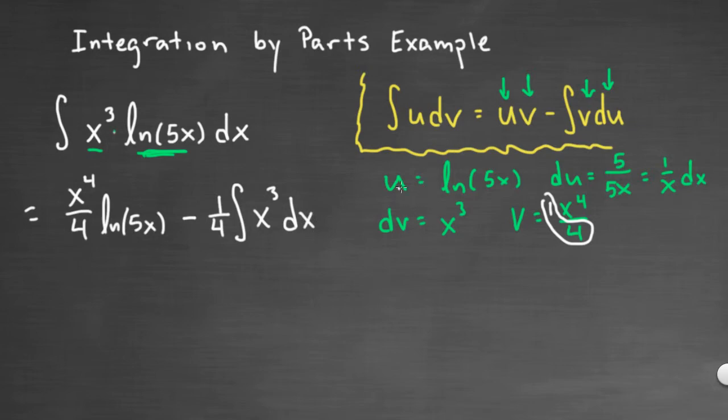Now, if we made a wise decision, if we picked u and dv correctly, what you'll notice is that this integral here should be easier to do. And in fact it is. I can integrate x cubed, no problem.